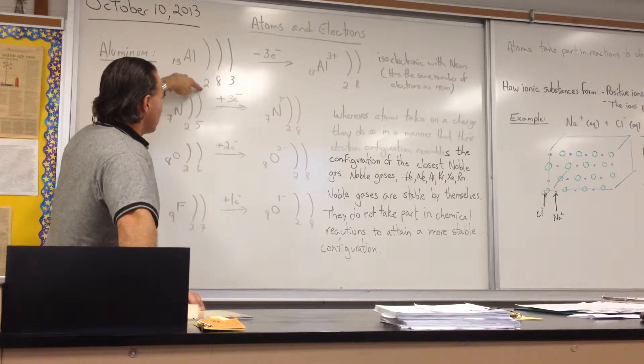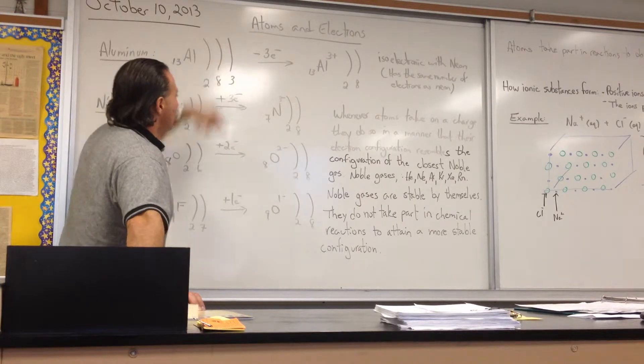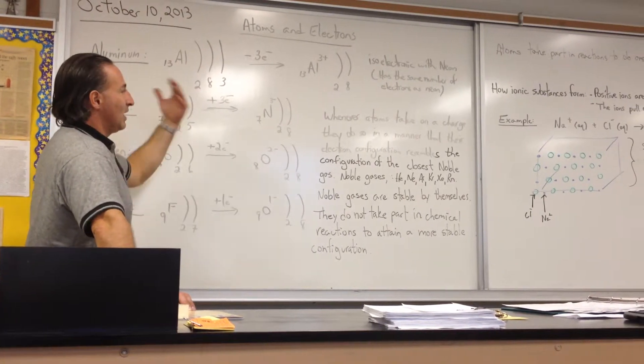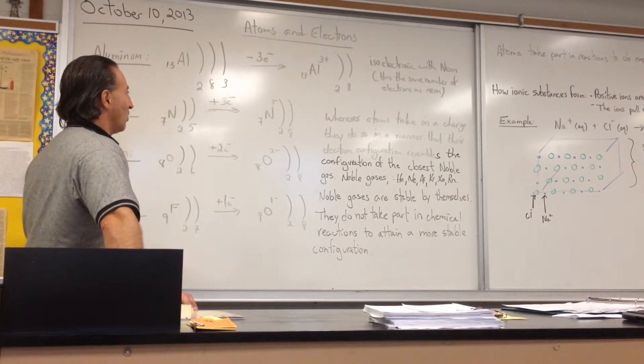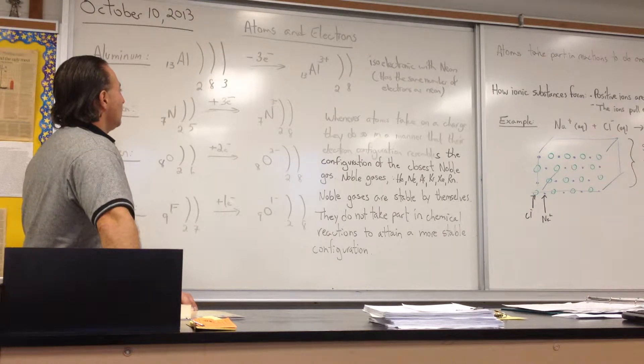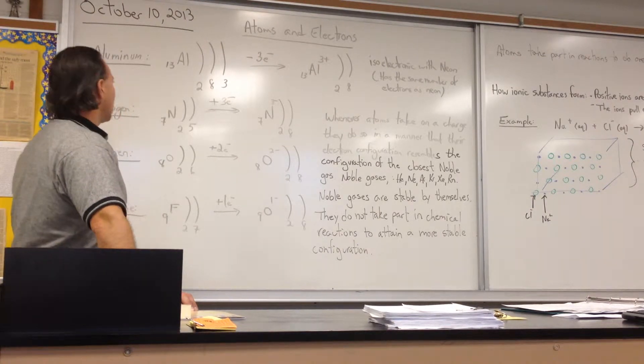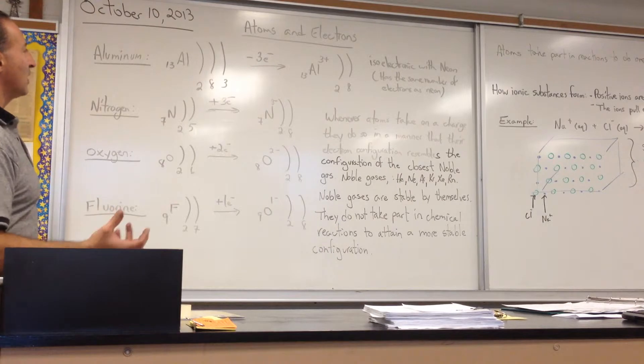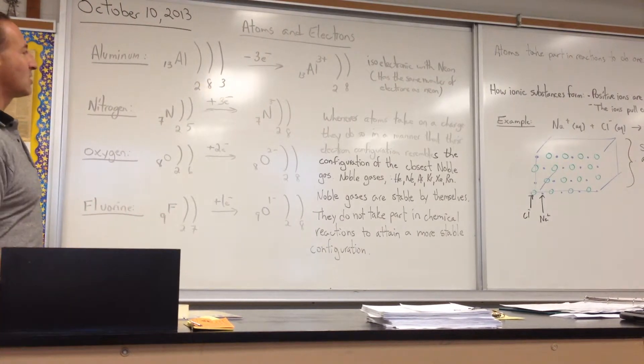You're going to put two in the first orbital, eight in the second one, and three in the valence shell, which is the last shell. The last shell of electrons is called the valence shell. And you'll find that when atoms lose electrons, they like to lose enough electrons so that they resemble the closest noble gas.